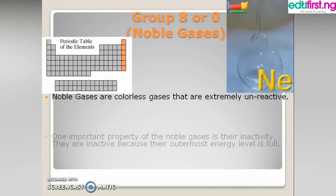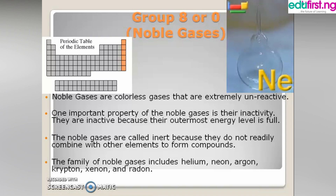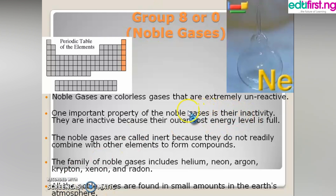Group 8 elements are called noble gases or inert gases. They are colorless gases and are unreactive — they don't react with any elements. This inactivity is because they have a filled outermost energy level, meaning they have completed their octet structure. They can no longer engage in bonding or react with any elements. They are also called inert gases because they do not readily combine with other elements to form compounds.